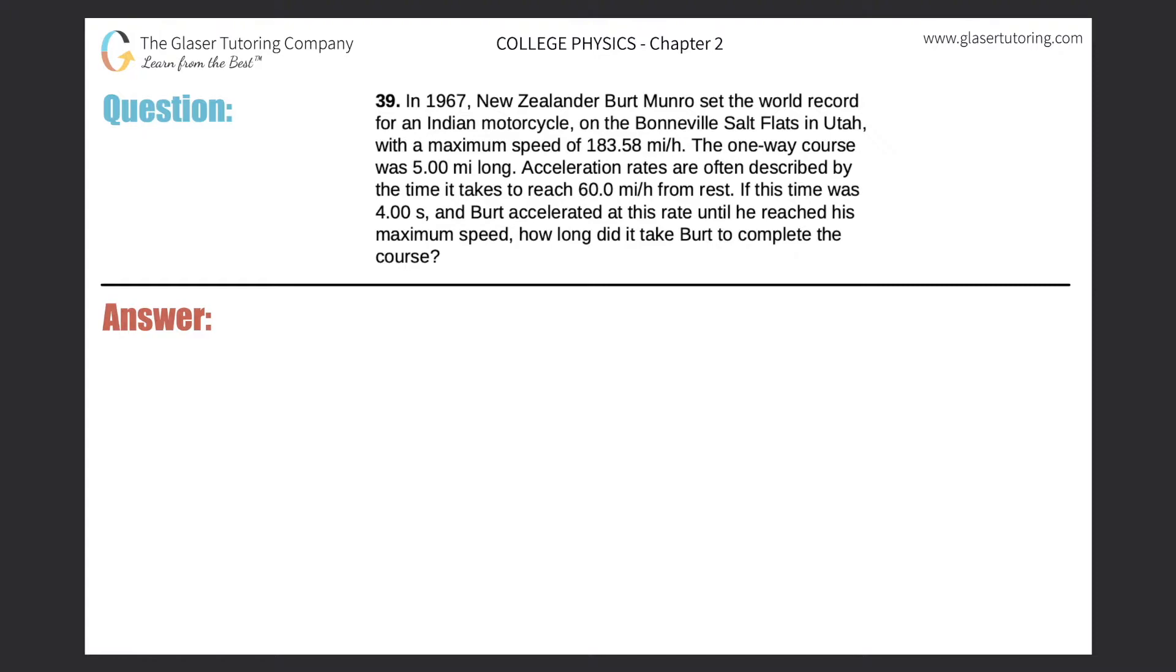Number 39. In 1967, New Zealander Bert Munro set the record for an Indian motorcycle on the Bonneville Salt Flats in Utah with a maximum speed of 183.58 miles per hour. The one-way course was five miles long. Acceleration rates are often described by the time it takes to reach 60 miles per hour from rest. If this time was four seconds, meaning the time it took to go from rest to 60 miles per hour, and Bert accelerated at this rate until he reached his maximum speed, how long did it take Bert to complete the course?